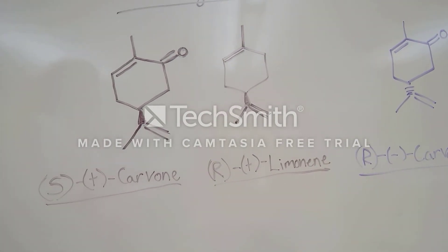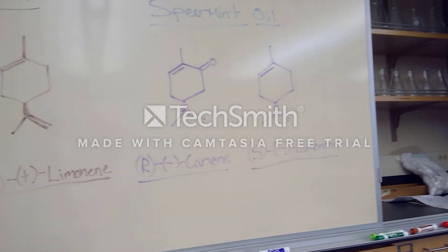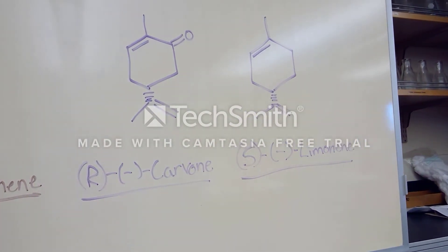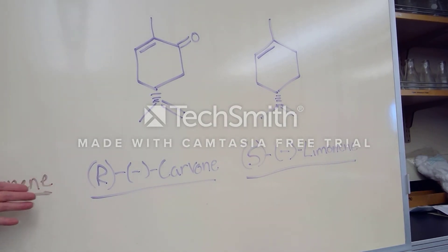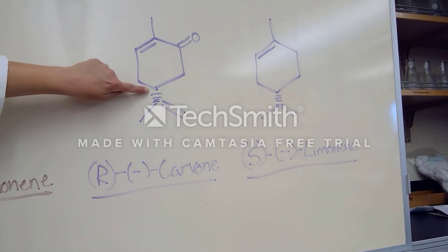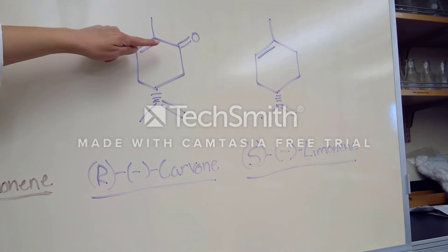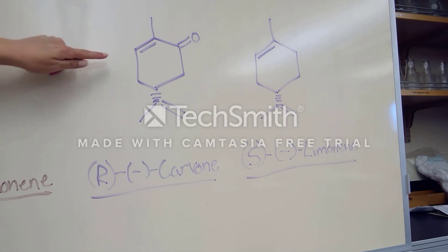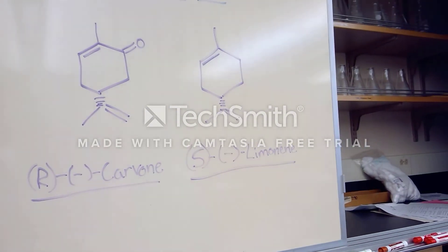For spearmint oil we will see similar structures, however we have a different direction at the chiral center. Spearmint oil contains R(-)-carvone — at the chiral carbon here we notice that the group is going backwards. You still have the ketone functionality with the conjugated alkene next to it, and the negative symbol indicates the direction of optical rotation.